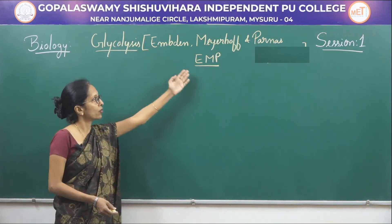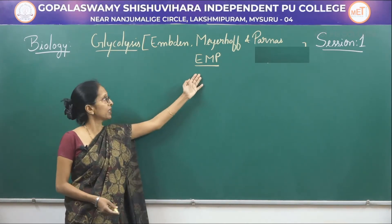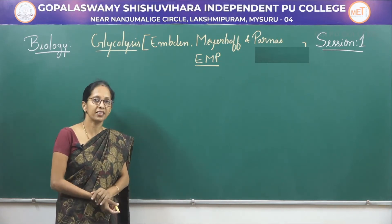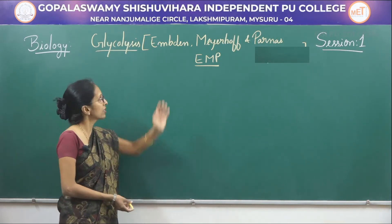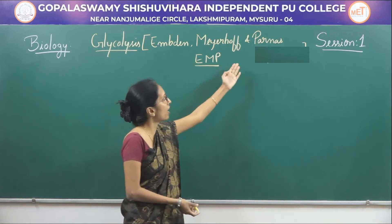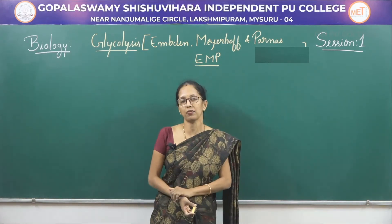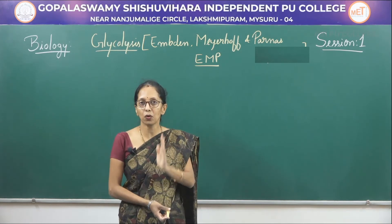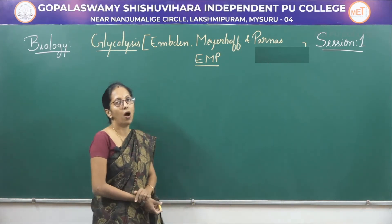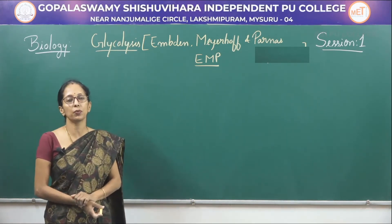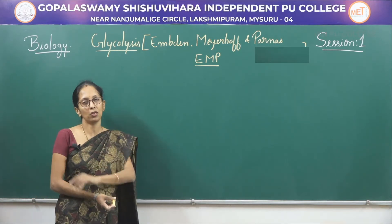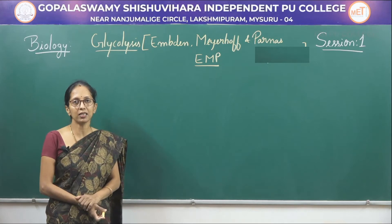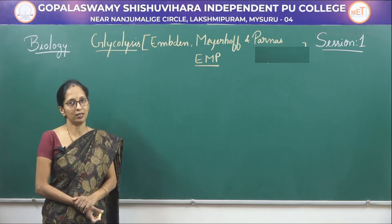Glycolysis is also known as the EMP pathway, named after the scientists who identified it: Embden, Meyerhof, and Parnas. So glycolysis is a process in which a molecule of glucose is broken down into two molecules of pyruvic acid, and it takes place in the cytoplasm.